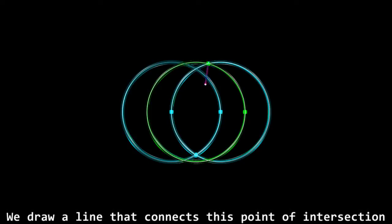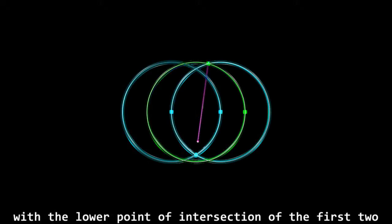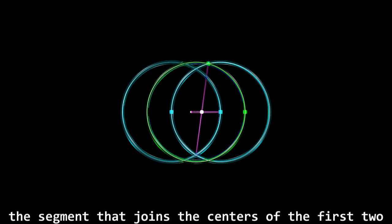We draw a line that connects this point of intersection with the lower point of intersection of the first two. We then draw the segment that joins the center of the first two.